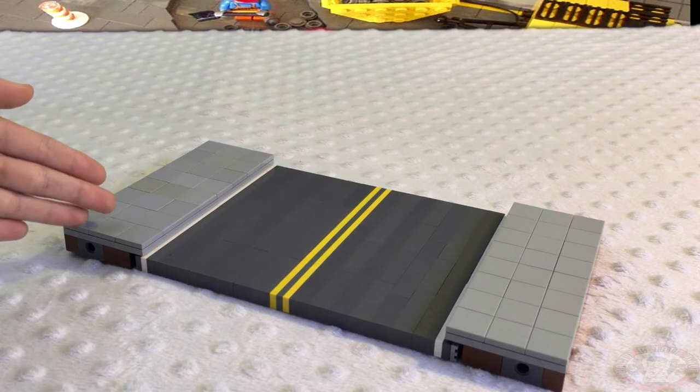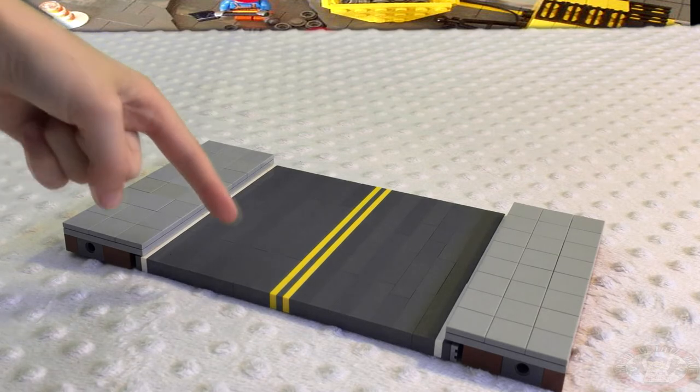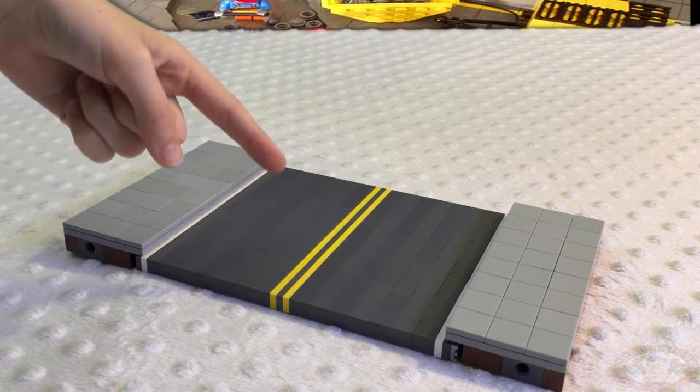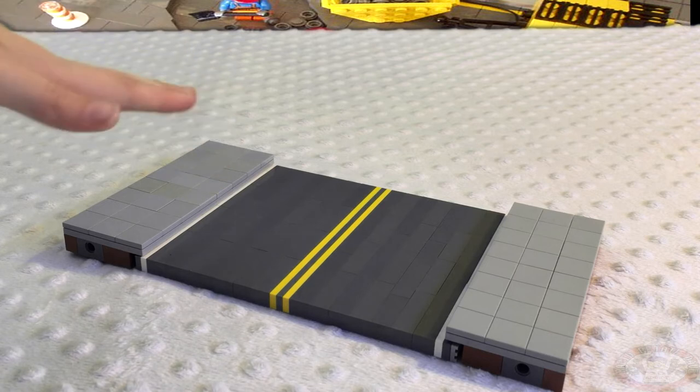So here we have it, our Lego Modular Road. And the first thing I want to point out are the solid double yellow lines, which means it's a no passing zone.